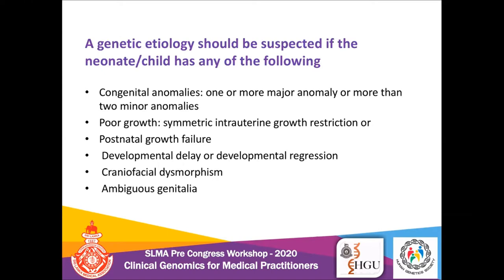Other indicators include poor growth — symmetrical intrauterine growth restriction in utero or growth failure postnatally — and developmental delays or developmental regression, where a child develops all milestones and then suddenly regresses. Craniofacial dysmorphism is also very commonly identified. Another very commonly encountered dysmorphic feature in clinic is ambiguous genitalia.